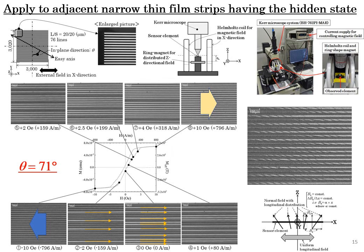Now let me introduce the case of multiple elements. This sheet shows an experimental result for adjacent elements having the hidden state. The 20 µm width and 3000 µm length elements were adjacently aligned with the line space as 20 µm width and 20 µm. The result shows that the elements in the adjacent layout still have the same property as the single element having the hidden state.